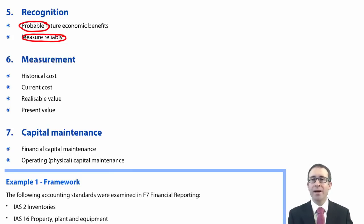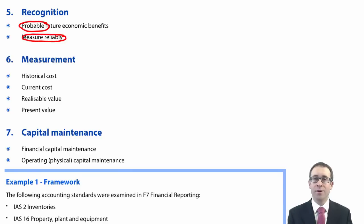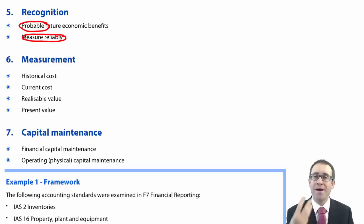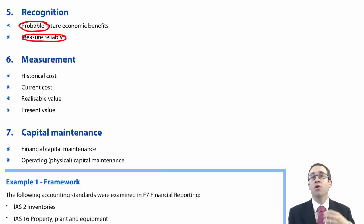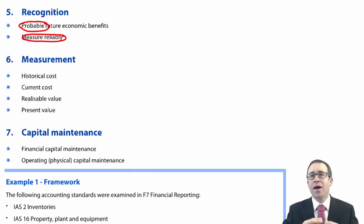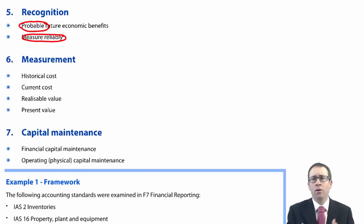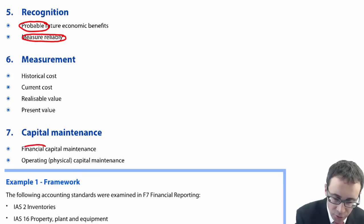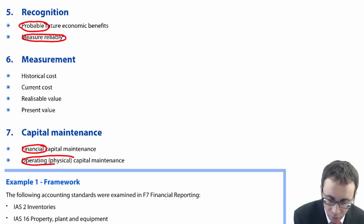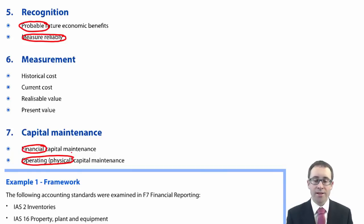The last part of the framework is capital maintenance. Capital is essentially the money invested within the business, and the question is whether that money is being maintained year on year — ideally maintained and improved. The more capital you generate and the more profitability you make, ultimately the more cash you'll have, the more dividend you'll receive, and the more wealthy you become. There are two approaches: financial capital maintenance and, as a more theoretical thought process, operating or physical capital maintenance.